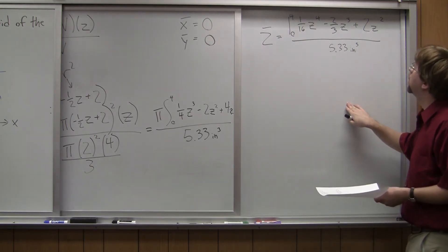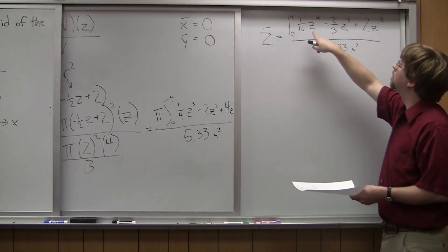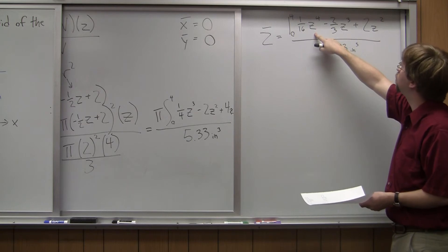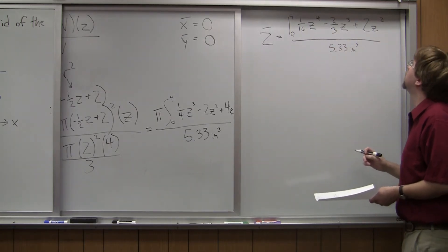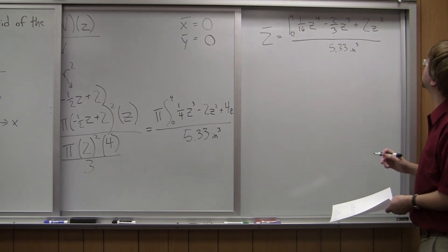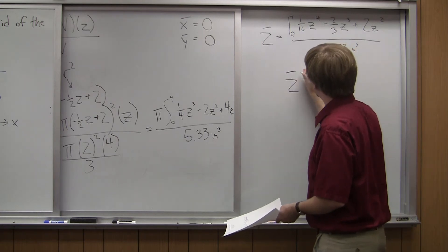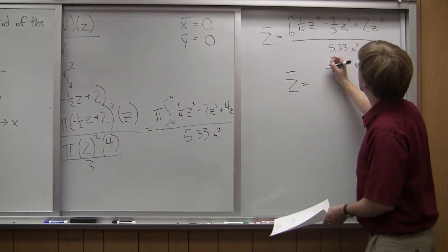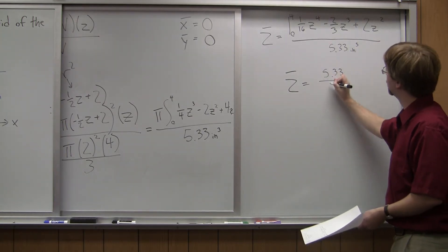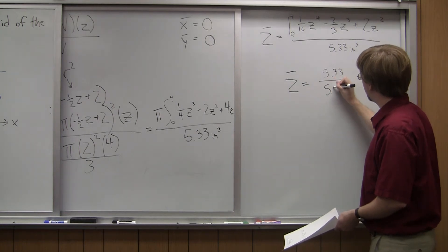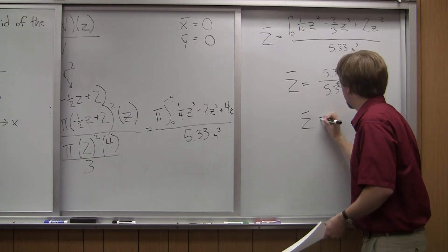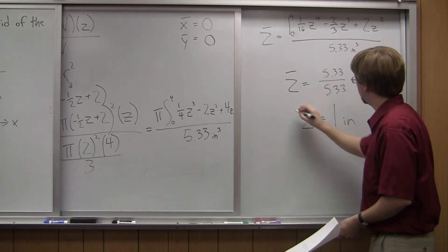All right. So if I evaluate this, I'm going to plug in four each time I see z. So one sixteenth times four to the fourth minus two thirds times four to the third plus two times four squared. I end up getting z-bar equals 5.33 over my original volume, which is 5.33. So z-bar ends up being equal to one, units being inches.